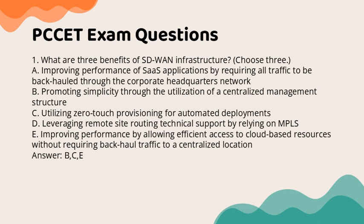Question 1: What are three benefits of SD-WAN infrastructure? Choose three. a. Improving performance of SaaS applications by requiring all traffic to be backhauled through the corporate headquarters network. b. Promoting simplicity through the utilization of a centralized management structure. c. Utilizing zero-touch provisioning for automated deployments. d. Leveraging remote site routing technical support by relying on MPLS. e. Improving performance by allowing efficient access to cloud-based resources without requiring backhaul traffic to a centralized location. Answer: b, c, e.